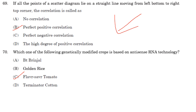If all the points of a scatter diagram lie on a straight line moving from the left bottom to the right top corner, the correlation is called a perfect positive correlation. Answer is option B.